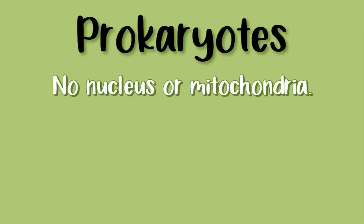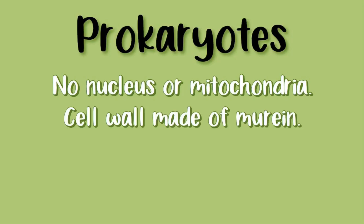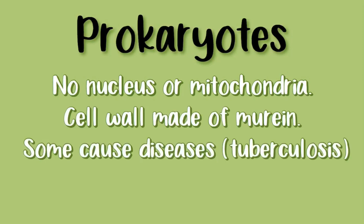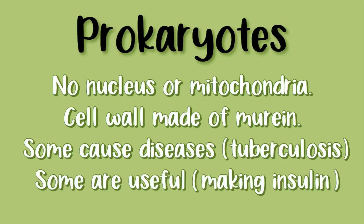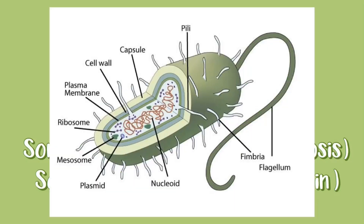Lastly, we have prokaryotes. Prokaryotes do not have a nucleus or a mitochondria. Their cell walls are made of murein. Some of them can cause diseases such as tuberculosis, while others are useful, such as making insulin. Here is an example of a labelled diagram of a prokaryote.